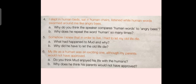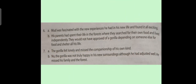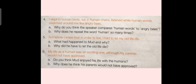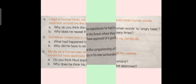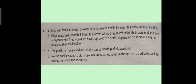Question No. 6: "My life as a human was an exciting one, although my parents would not have approved." Question A: Do you think Mud enjoyed his life with the humans? Answer: Mud was fascinated with the new experiences he had in his new life and found it all exciting. Question B: Why does he think his parents would not have approved? Answer: His parents had spent their life in the forest where they searched for their own food and lived independently. They would not have approved of a gorilla depending on someone else for food and shelter all his life.